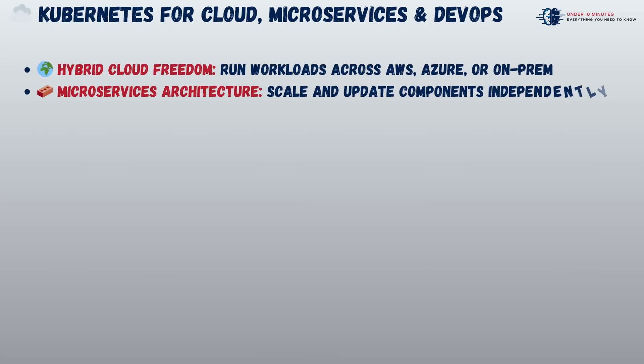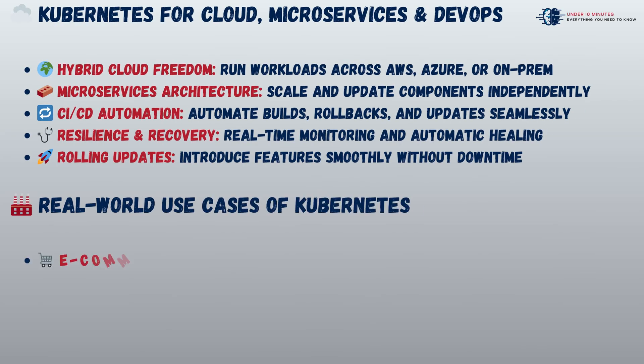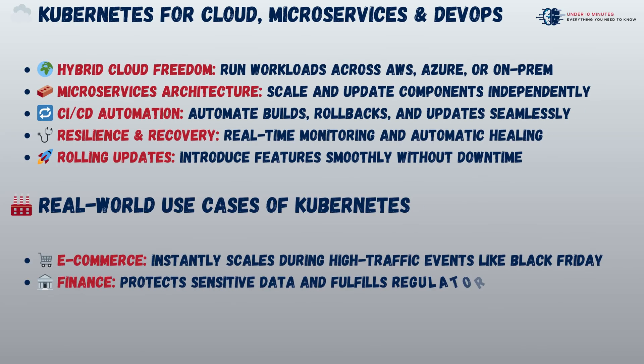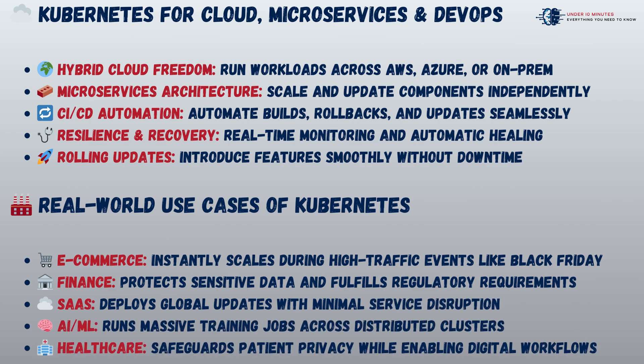Kubernetes has become the cornerstone of cloud-native computing, empowering organizations to run workloads anywhere — from AWS or Azure to on-premises environments — with flexibility and control. Its microservices architecture enables faster, independent development, while CI/CD integration streamlines the entire release pipeline. With built-in monitoring, self-healing, and rolling updates, services remain robust without any interruption.